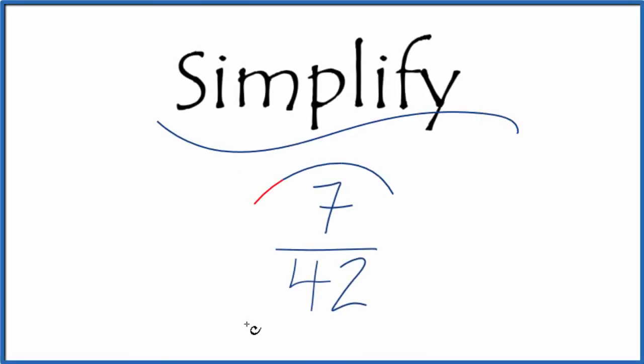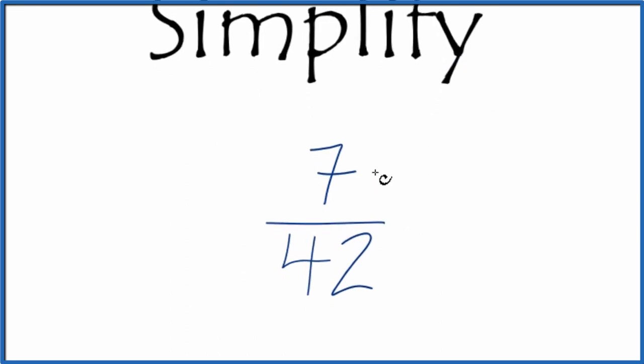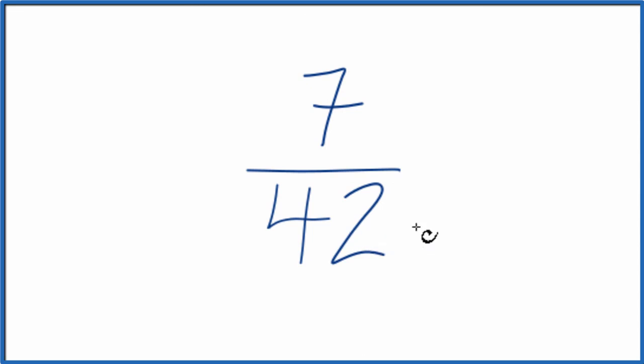Let's simplify the fraction 7/42. And here's how we'll do it. We want to find another fraction that's equivalent. It has the same value as 7 over 42, just that we've reduced it to its lowest terms.